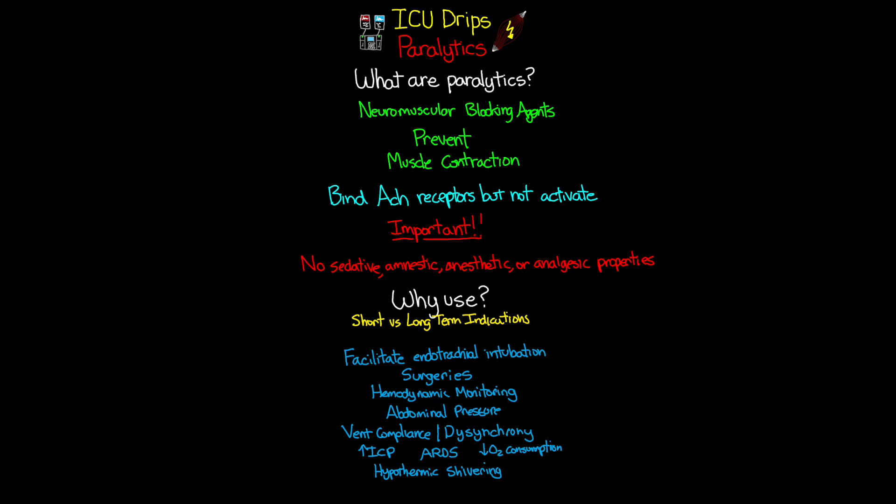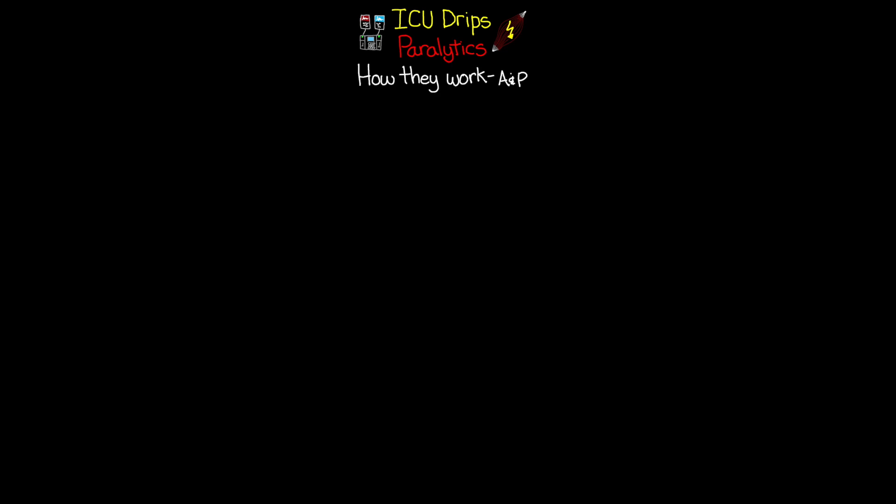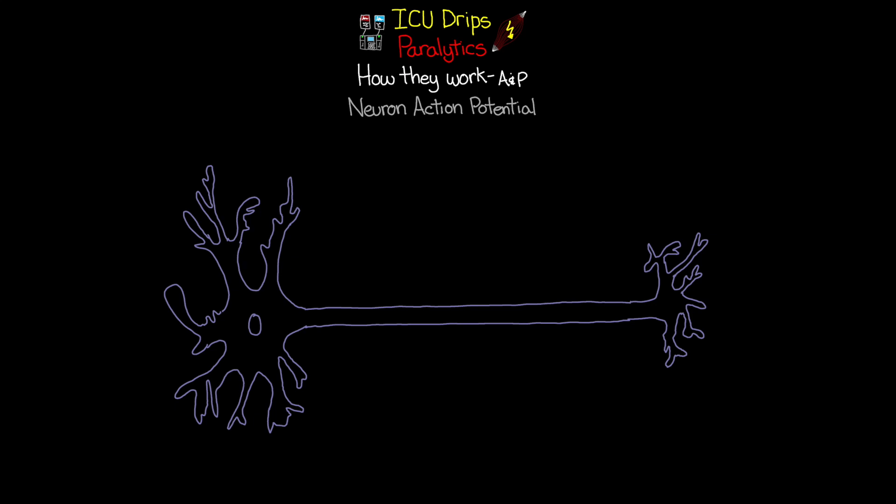To really understand how these medications work, we need to dive into some anatomy and physiology. There are two parts of this process to discuss. The first is the neuron action potential. Here we have a picture of a neuron with its long axon and dendrite at the end. An action potential is a brief reversal of the transmembrane voltage across an excitable membrane — in this case, the membrane of the neuron cell and especially the axon.